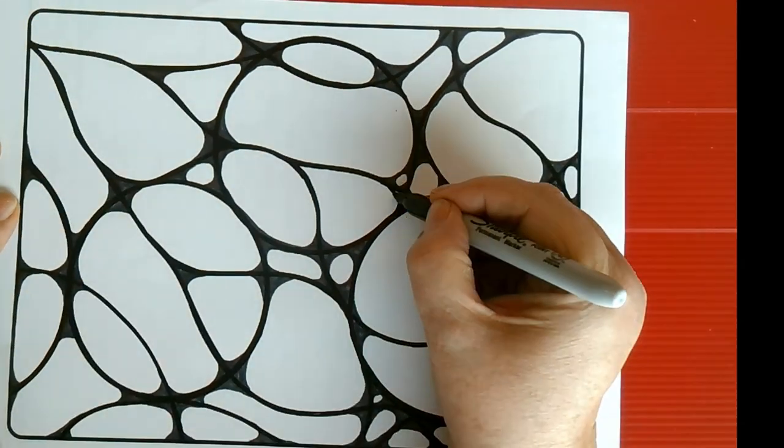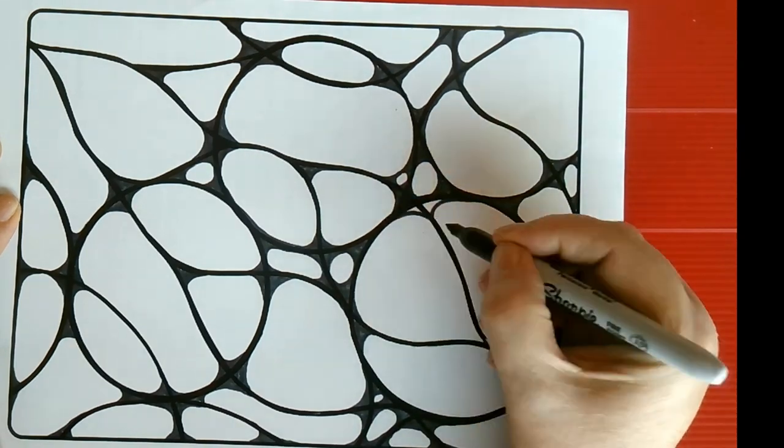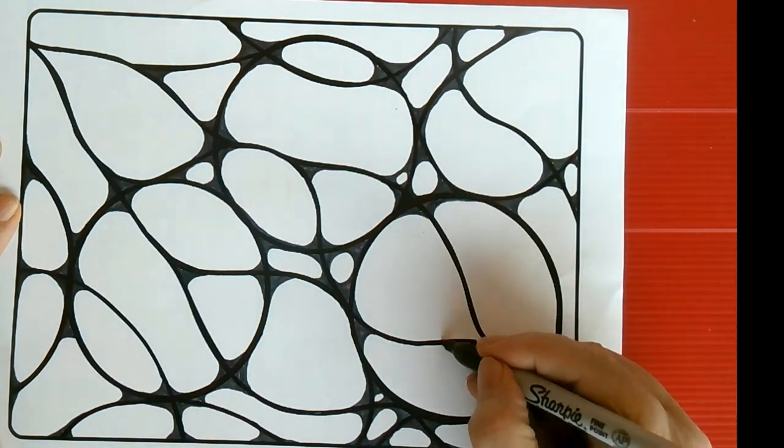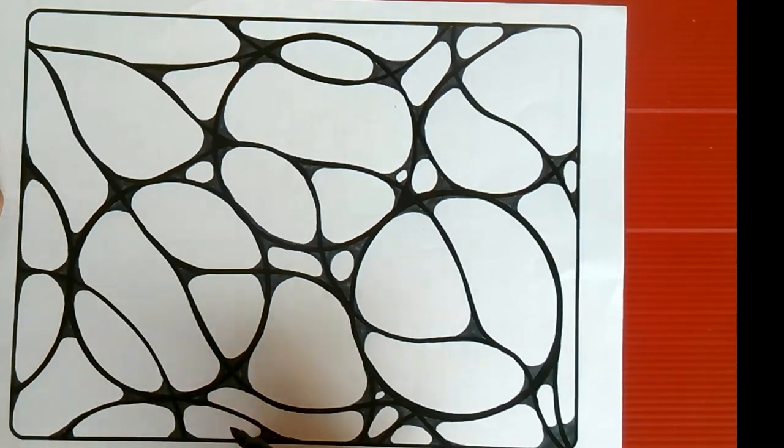As you draw, remember to round off the corners of your image, letting go of rigid thinking and negative thoughts. As you do this, you are strengthening the connections in your brain and developing a more flexible and resilient mindset.